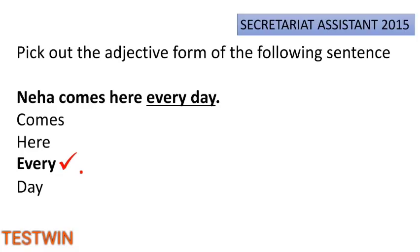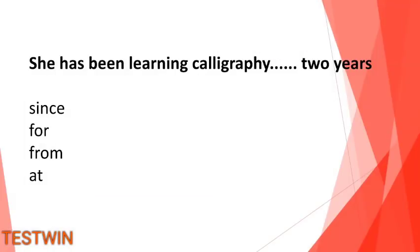If you follow our videos, I will discuss these English questions. The answer is Option 2: she has been learning calligraphy for two years. The tense used is present perfect continuous.